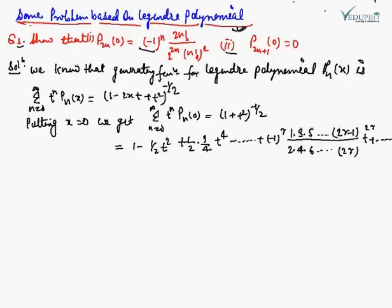We know that the generating function for the Legendre polynomial Pₙ(x) is: summation n from 0 to infinity of tⁿ Pₙ(x) equals (1 − 2xt + t²)^(−1/2). Now if we put x = 0 in the generating function, we get summation n from 0 to infinity of tⁿ Pₙ(0) equals (1 + t²)^(−1/2).